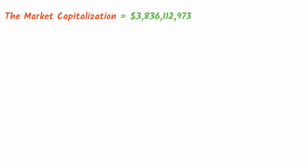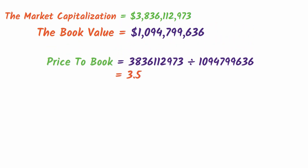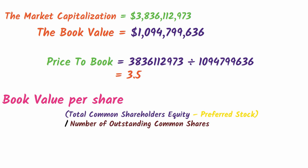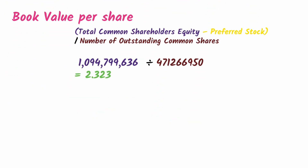Now that we have the market cap and book value, the PB ratio is market cap divided by book value, giving 3.5. We also need the book value per share, which equals total common shareholders' equity minus preference shares, divided by outstanding common shares: $1,094,799,636 divided by 471,266,950, giving a book value per share of $2.323.